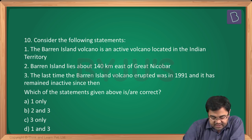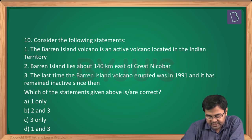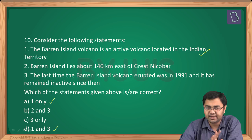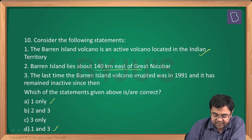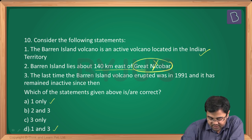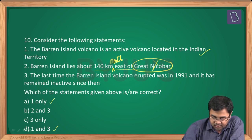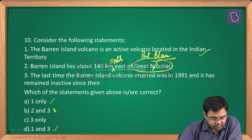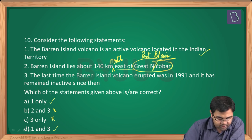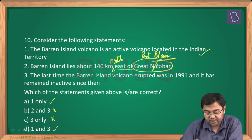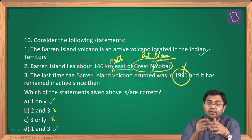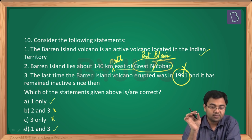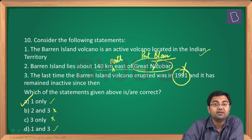Question number 10: the Barren Island volcano is an active volcano located in Indian territory — correct. Statement 2 says Barren Island lies about 140 km east of Great Nicobar — wrong, it is 140 km northeast of Port Blair. So statement 2 is eliminated. Statement 3 says the last eruption was in 1991 — wrong, because there was another eruption very recently in 2017. So we are left with statement 1 only.